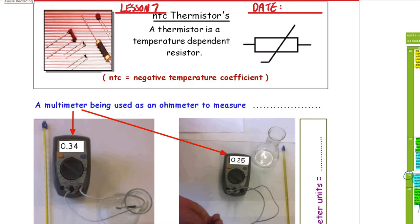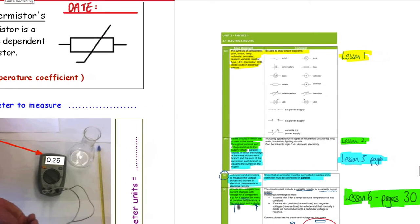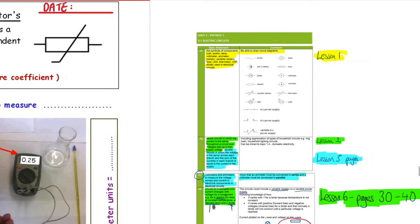Welcome back. Lesson 7, Year 10 Physics. In today's lesson we're going to be learning about two components you probably haven't met before. They're called the thermistor and LDR. LDR stands for light dependent resistor.